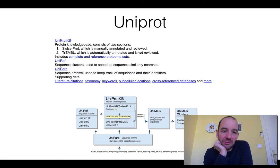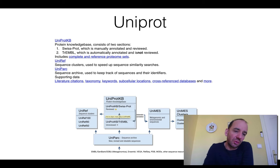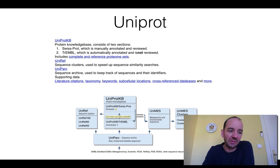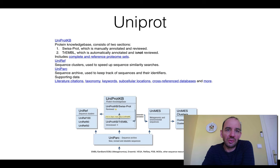UniProt is the main sequence database. It contains two main parts — one is called SwissProt, and one is called TrEMBL, which stands for Translated EMBL database. The main difference is that SwissProt contains manually annotated and reviewed entries, so all the data — not only the sequence but all other data — should be of high quality. It's not always correct, but it is much more likely to be correct because it has been manually annotated. In contrast, TrEMBL contains many more sequences but is only automatically annotated and not reviewed — basically a computer program adds data to the protein automatically.